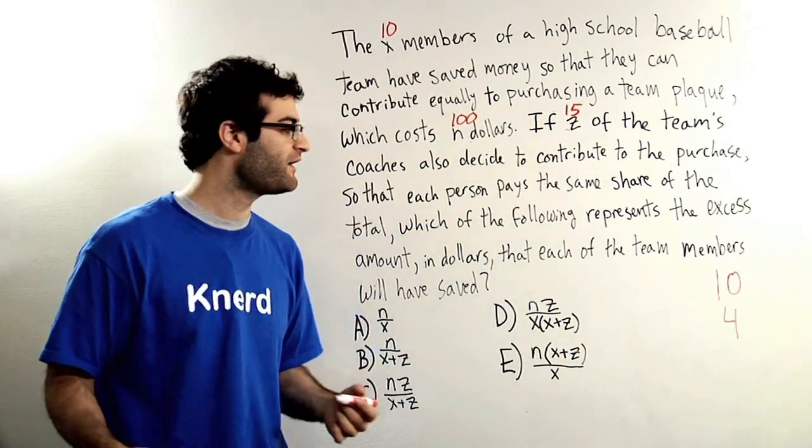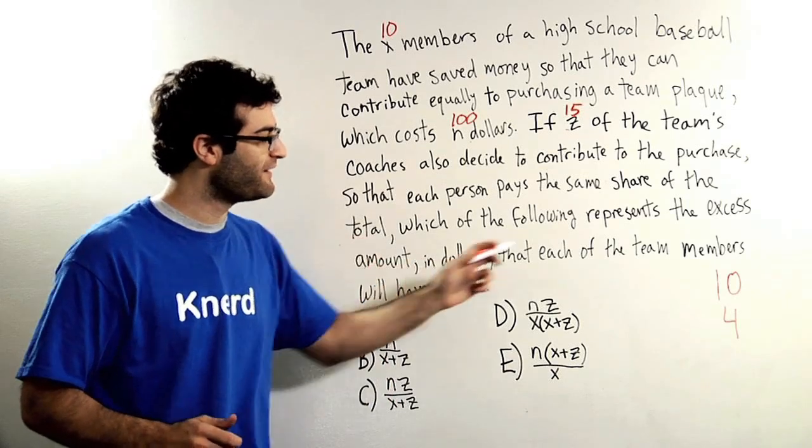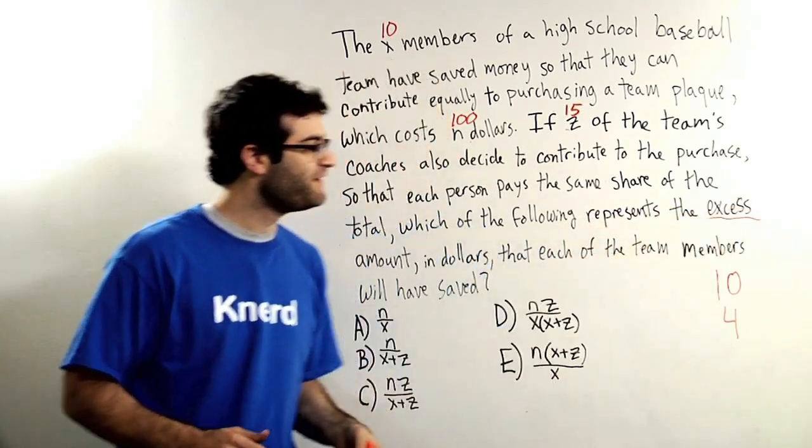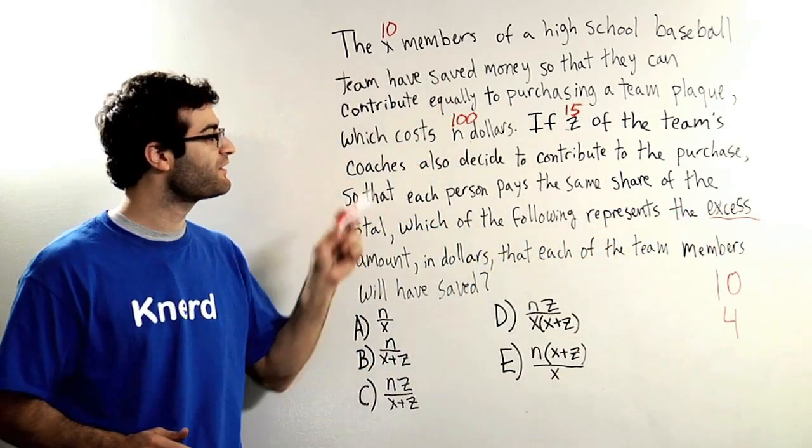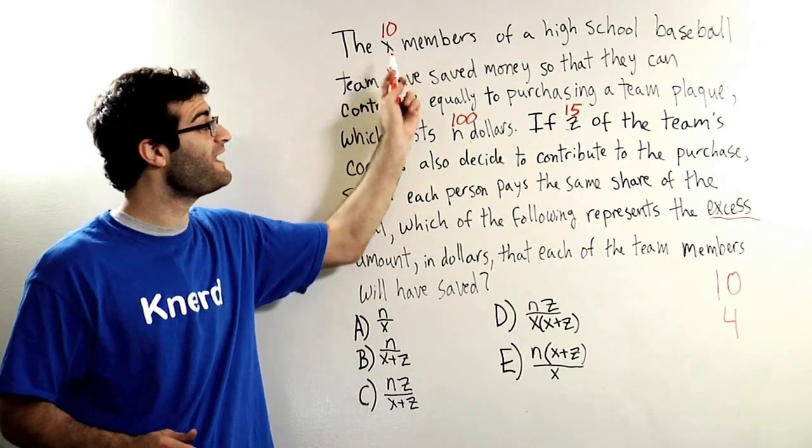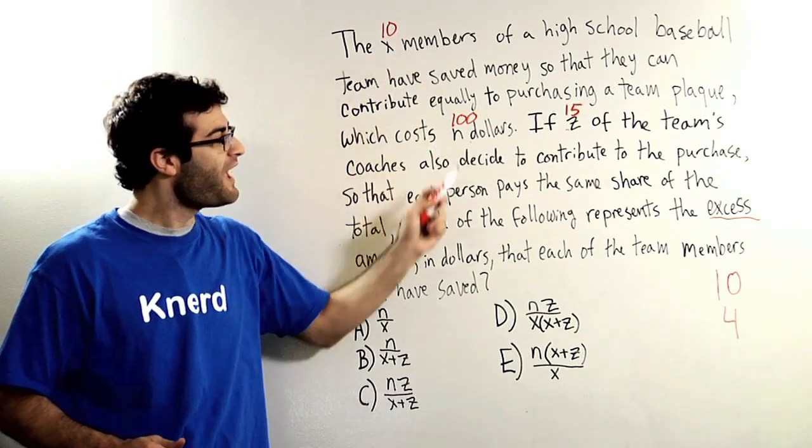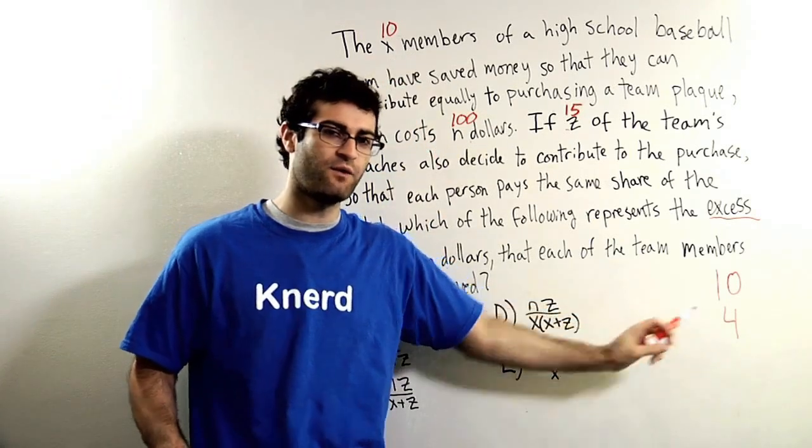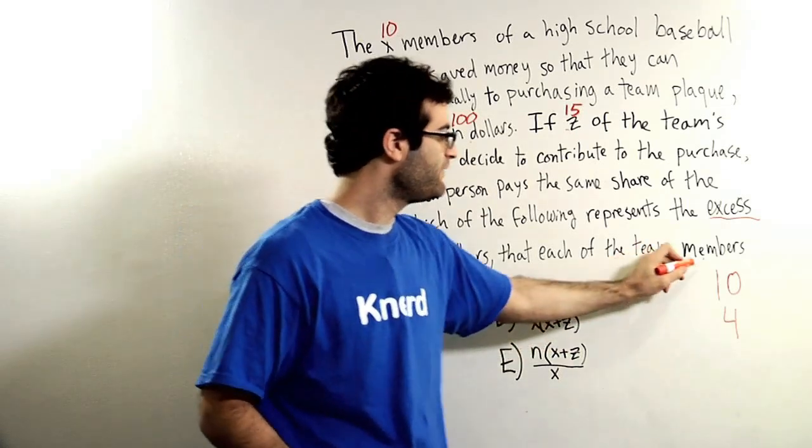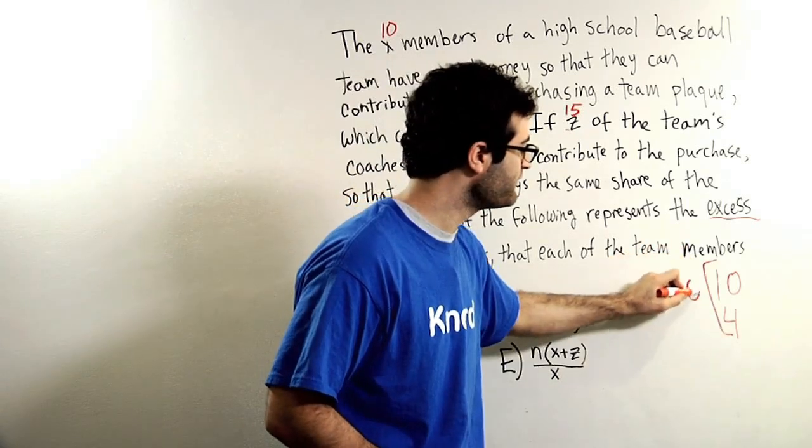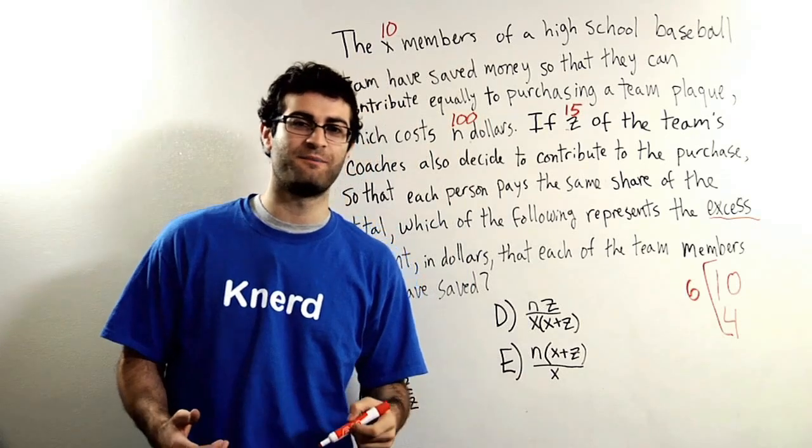Now what I'm asked about is the excess that these players saved in order to contribute to the plaque. They saved $10 initially and then it turns out that they only have to pay $4 a piece. What was their excess? They saved $6 by not having to spend it on the plaque.